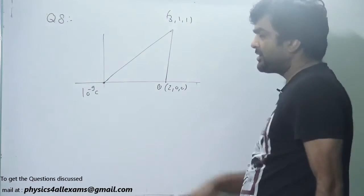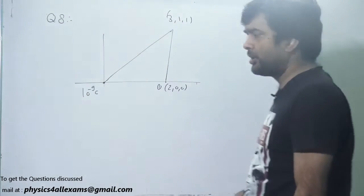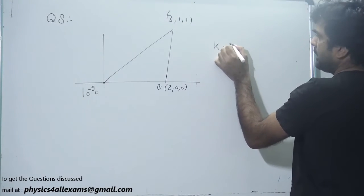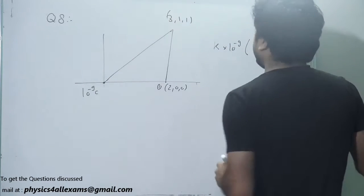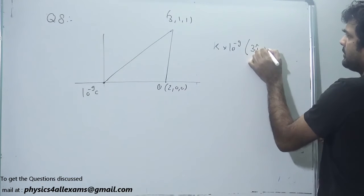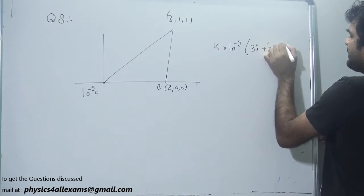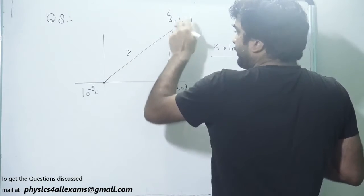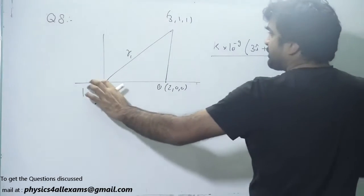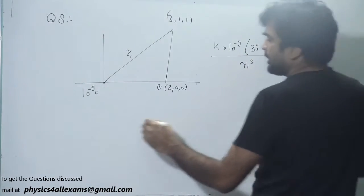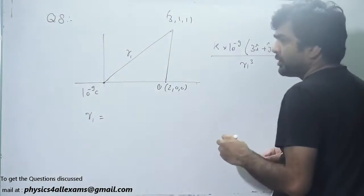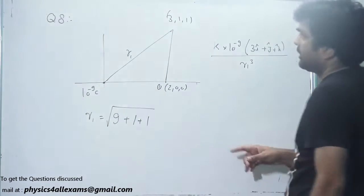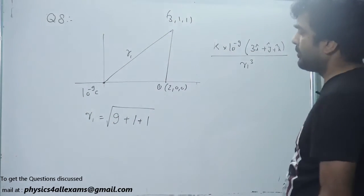Because of this charge 10^-9 coulomb, electric field at this point will be K into 10^-9, this position vector 3i cap plus j cap plus k cap upon R cube. This is the distance, let us say R1 between this charge and this point. It would be R1 cube and R1 will be in terms of magnitude, 9 plus 1 plus 1, under root 3 square plus 1 square plus 1 square, it would be root 11.